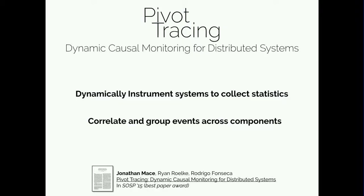I will begin with a tool called Pivot Tracing. Pivot Tracing is about aggregating statistics from systems along this end-to-end cross-cutting dimension. The goal is to dynamically instrument the systems to collect statistics, but to group and filter those statistics based on arbitrary request properties, regardless of where in the end-to-end execution they come from.